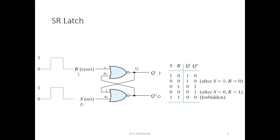So the output here is 0. Initially Q was 1, and now Q becomes 0. Here, 1 and 0 give 0, so this input remains 0. Now this Q, which changed from 1 to 0, is fed back. This input becomes 0 and now becomes 1. We get 0 OR 0 is 0, and NOT of 0 is 1. Then 1 OR 1 is 1, and NOT of 1 is 0, so Q remains 0.